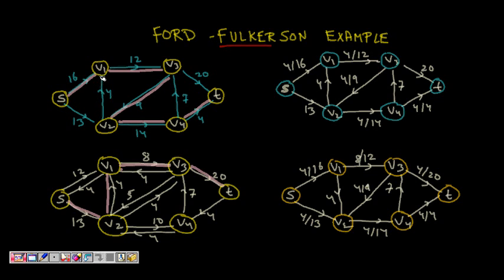The first path chosen is S→V1→V3→V2→V4→T. Think of this as a pipeline for water supply. The bottleneck link is V4 to T, which has the minimum capacity of 4. So the residual capacity for this path is 4, meaning we cannot push more than 4 units of flow along this path.